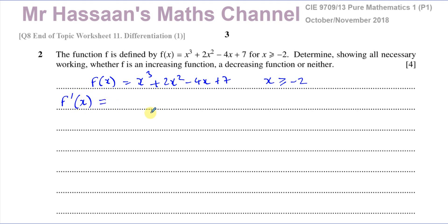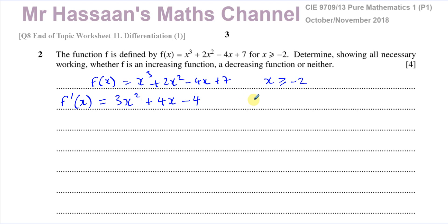The first thing we've got to do is find the derivative, or the gradient function. When you differentiate something, it's called finding the gradient function. I'm going to differentiate this function by multiplying by the power and taking one from the power. So x cubed gives 3x squared, 2x squared gives 4x, negative 4x gives minus 4, and the constant term becomes 0. This expression tells us the gradient of this function for all the values for which it is valid — that is, x greater than or equal to negative 2.